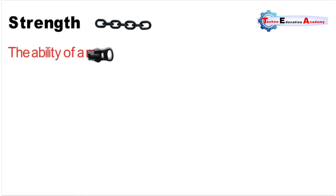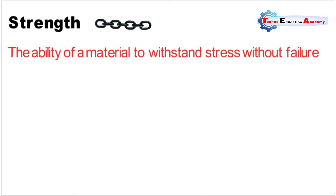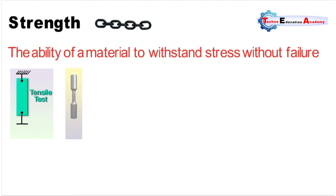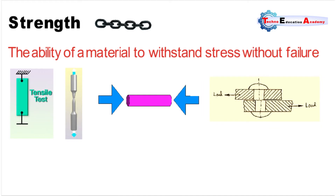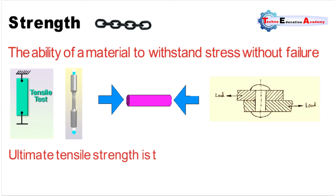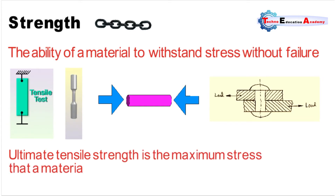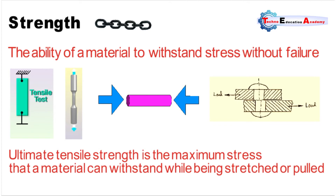The first property is strength. Strength is the ability of a material to withstand external load without breaking or yielding. Materials are subjected to different types of forces such as tensile force, compressive force, and shear force, and the corresponding strengths are known as tensile strength, compressive strength, and shear strength. The strength of a material plays a vital role in designing components of a machine or a member of a structure.